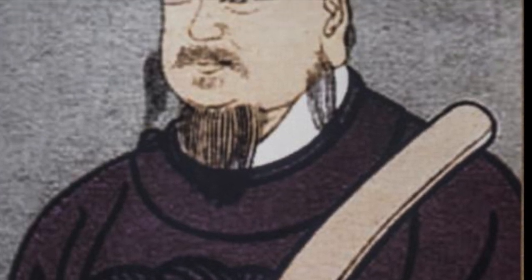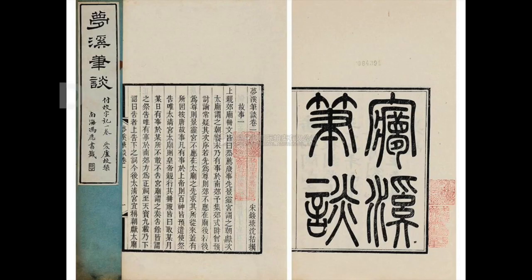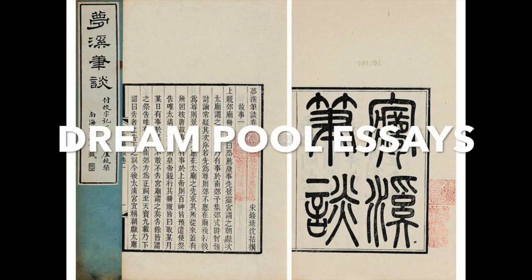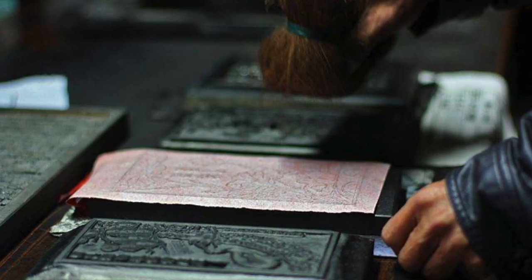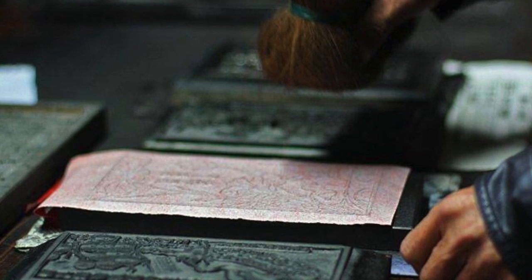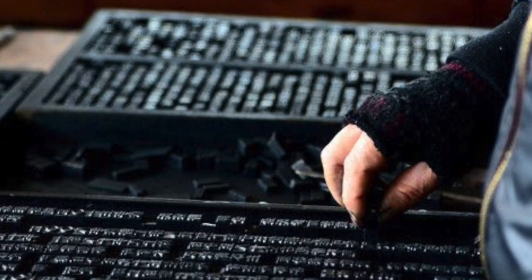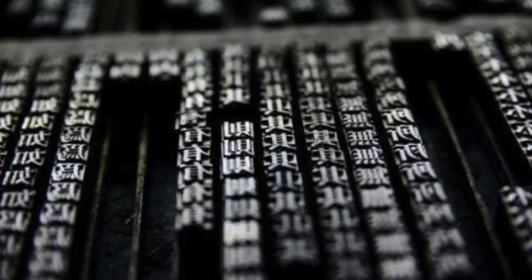The method used in movable type printing is described by Chinese scholar Shen Kuo in the Dream Pool Essays. When he wished to print, he took an iron frame and set it on the iron plate. In this, he placed the types set close together. When the frame was full, the whole made one solid block of type. He then placed it near the fire to warm it. When the paste at the back was slightly melted, he took a smooth board and pressed it over the surface so that the block of type became as even as a white stone.